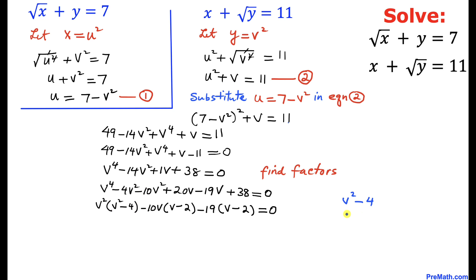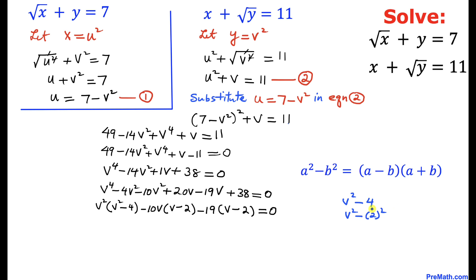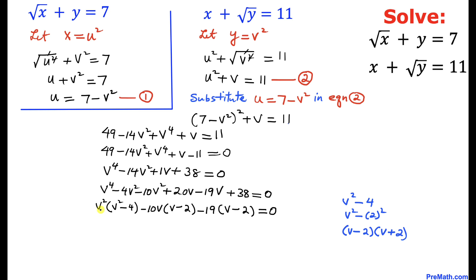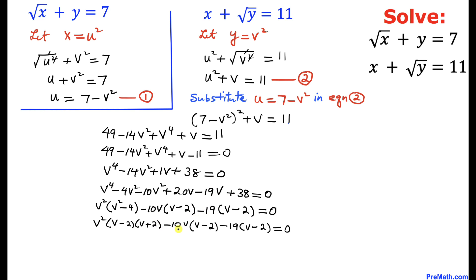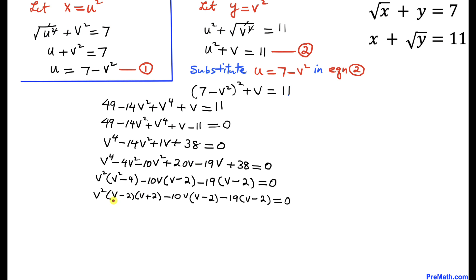Focusing on v squared minus 4: this can be written as v squared minus 2 squared, which is a difference of two squares. Using the formula a² minus b² equals (a minus b)(a plus b), we get (v minus 2)(v plus 2). Replacing v squared minus 4 in our equation with this factored form.